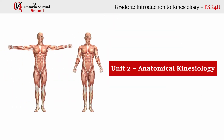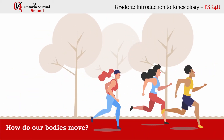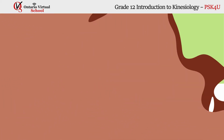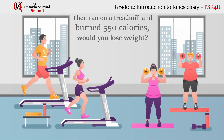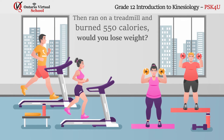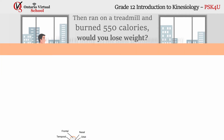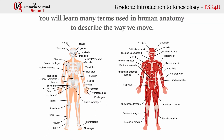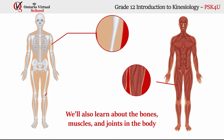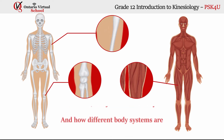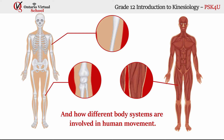Unit 2 – Anatomical Kinesiology. How do our bodies move? If you ate a 500-calorie chocolate bar, then ran on a treadmill and burned 550 calories, would you lose weight? In this unit, you will learn many terms used in human anatomy to describe the way we move. We'll also learn about the bones, muscles, and joints in the body, and how different body systems are involved in human movement.